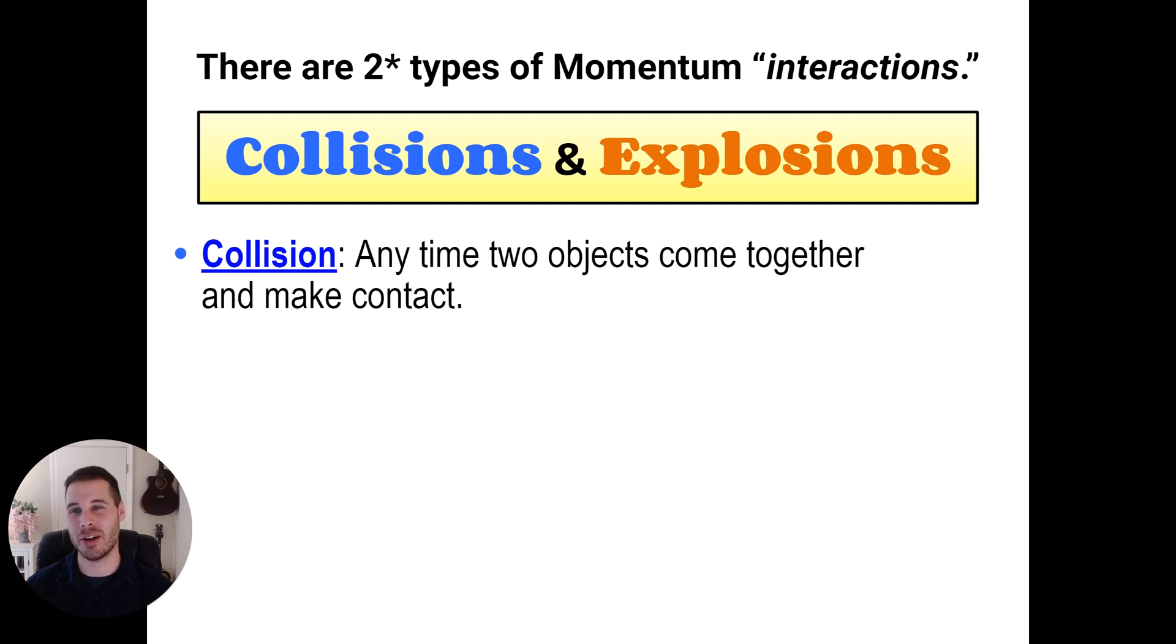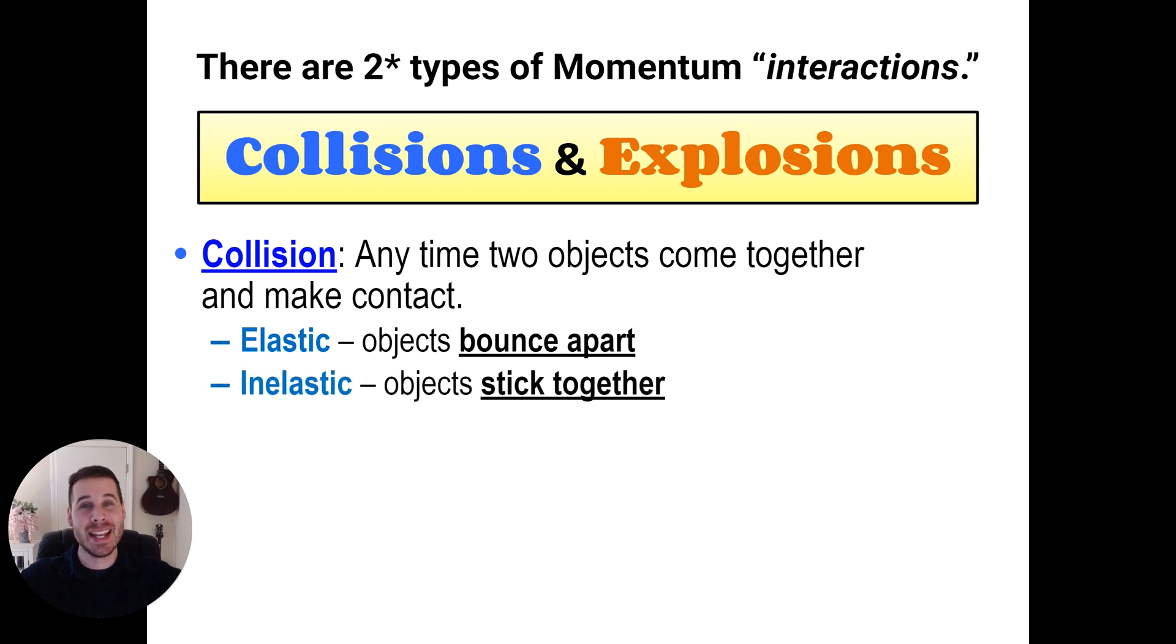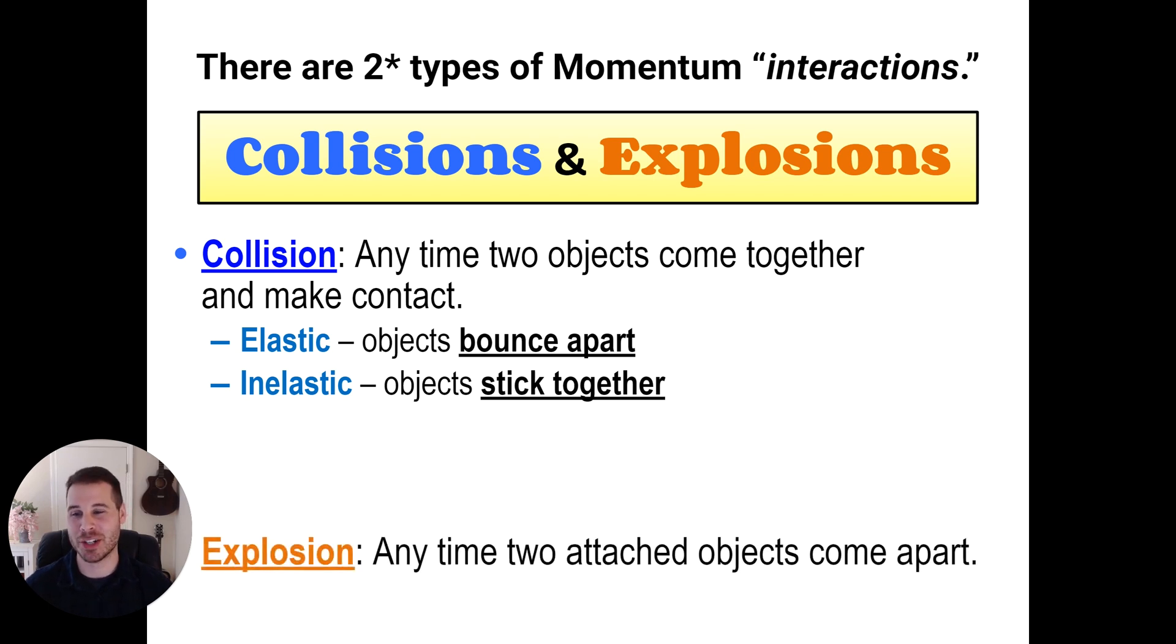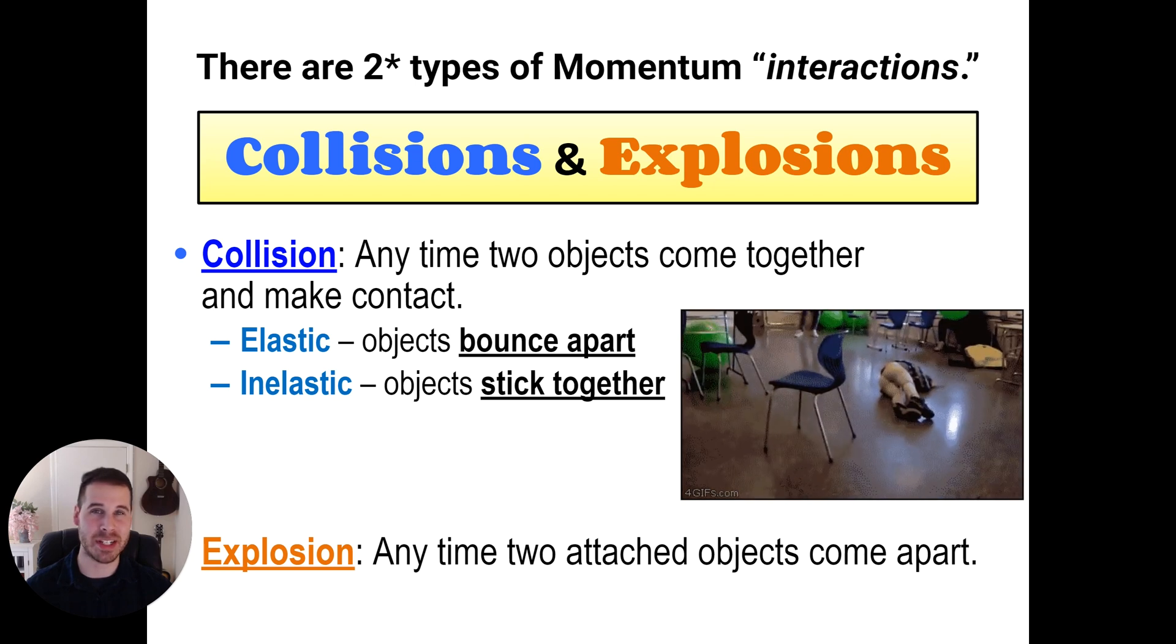So collisions are defined as anytime two objects come together and make contact. So there's a collision and there's a collision. I just showed you the two different types of collisions. In fact, the first is elastic collisions where things bounce apart after they collide. And the second is inelastic collisions where things stick together and remain as one object after they collide. The third type of interaction is called an explosion, which is anytime two attached objects come apart from one another.